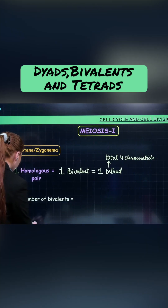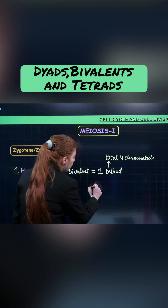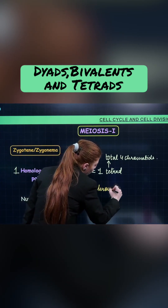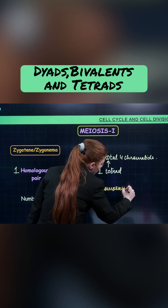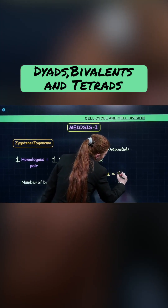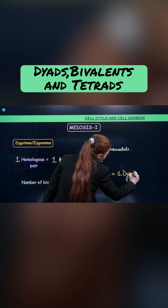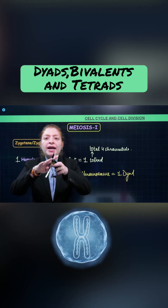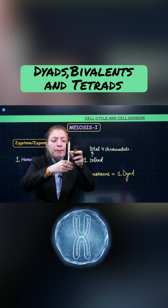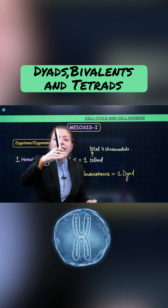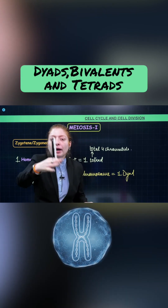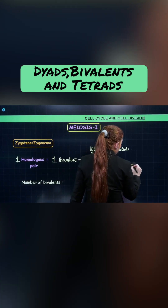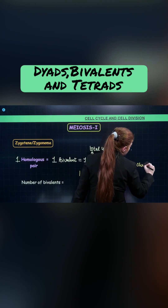Also you should know that one chromosome which consists of two chromatids, that can also be called as dyad. A chromosome ko — jaise ye ek chromosome hai, is mein doh chromatid hai — toh ye ek dyad hai, kyunki iske paas doh chromatid hai. Two chromatids, that is why.